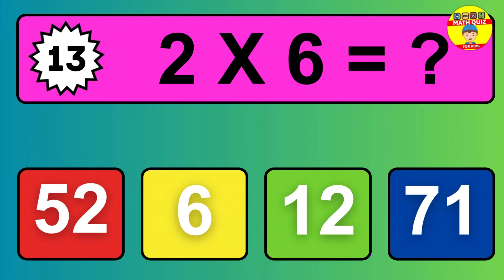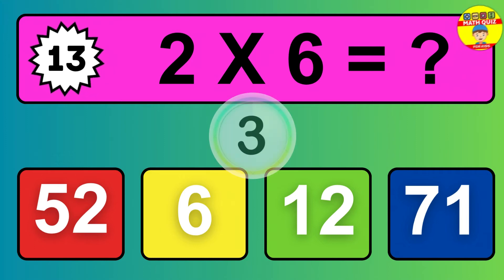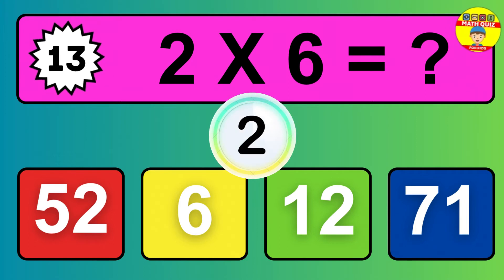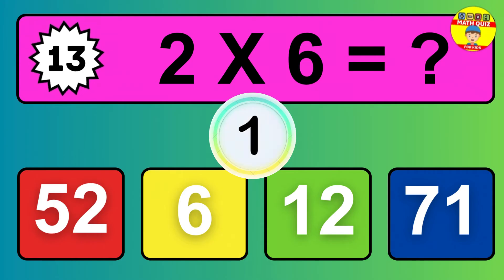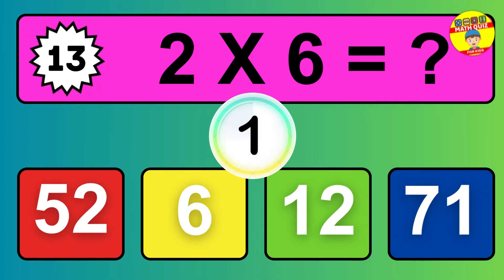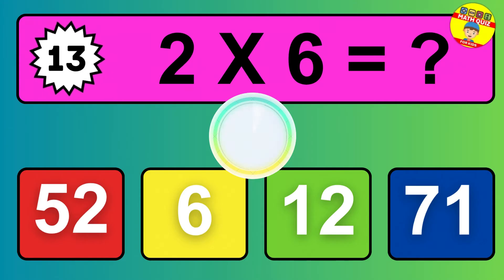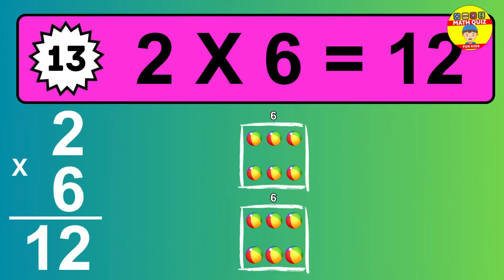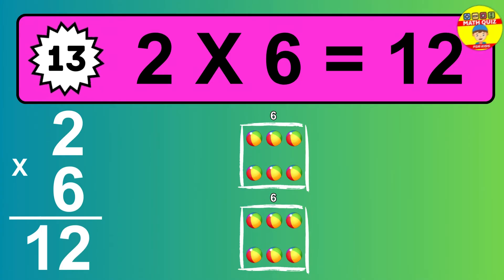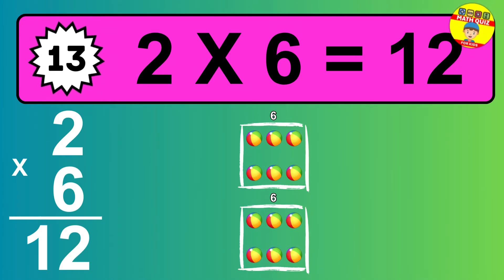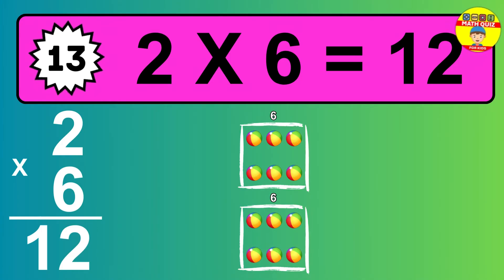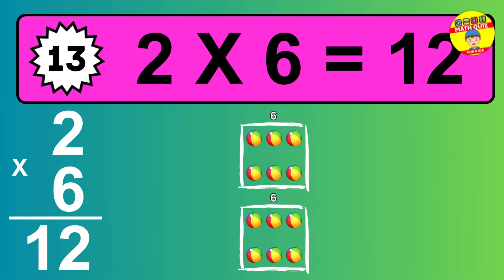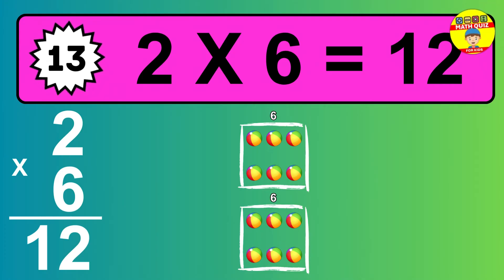Question 13. Two times six equals what? The answer is two times six is twelve. To calculate, we have two groups with six balls each one. So how many balls do we have? Twelve balls.